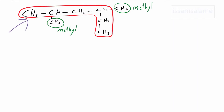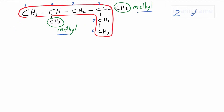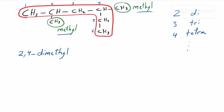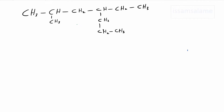We number the carbon atoms starting from the left, because starting from the right the two methyls would be at carbons 3 and 5, but starting from the left they are at carbons 2 and 4. When we have two similar groups we use the prefix 'di-'; three similar groups use 'tri-'; four similar groups use 'tetra-'. Since we have two methyls, we write 'di'. The numbers are 2 and 4, separated by a comma, then a hyphen, then 'dimethyl', and the longest chain is hexane: 2,4-dimethylhexane.